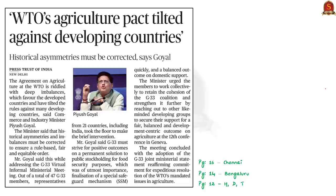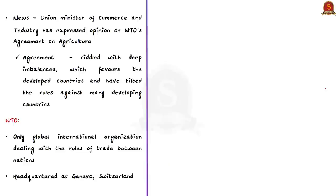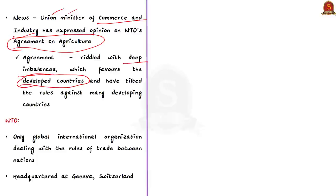Now look at this news article regarding the Agreement on Agriculture by WTO. Recently, our Union Ministry of Commerce and Industry expressed the opinion that the Agreement on Agriculture is riddled with deep imbalances that favour developed countries and are disadvantageous to developing countries. So in this context, let us know about WTO.